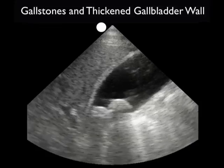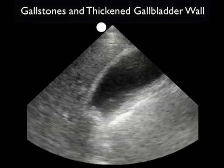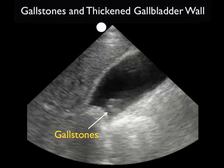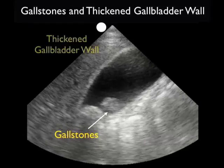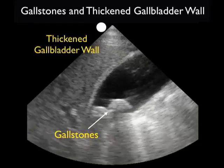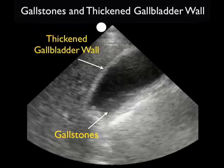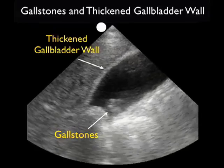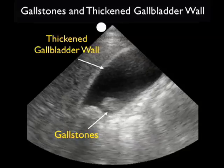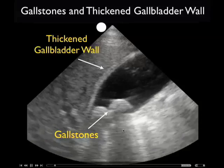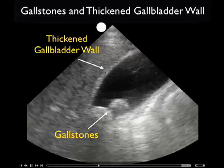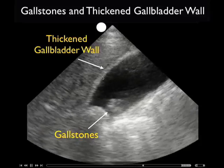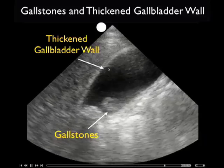Here's a video clip from a patient who presented with right upper quadrant pain and fever. As we look at the gallbladder, the first thing we see is the presence of multiple gallstones within the neck of the gallbladder. Also, we're going to examine here the anterior wall of the gallbladder, and notice with the small indicator arrow, I'm just pointing out that anterior wall.